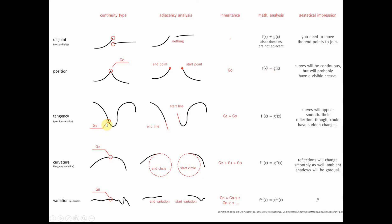Tangency continuity is G1. They have G0 plus they have the same slope. The slope of a curve or equation is defined by the first derivative. So at X, their first derivatives have the same slope — that's why you see in the math analysis column, Y prime of X equals G prime of X. Their derivatives are equal at that particular point. That's G1 continuity.